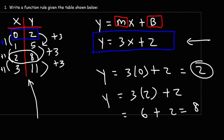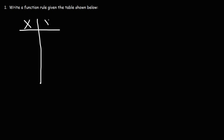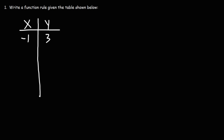For the sake of practice, let's try another example. Let's say we have the table with points: negative one and three, one and seven, three and eleven, and five and fifteen. Go ahead and pause the video and write a function rule given the data in this table.